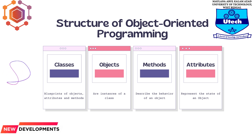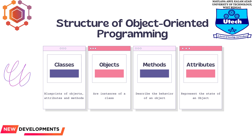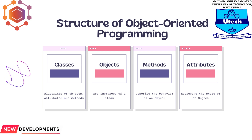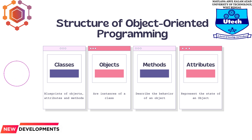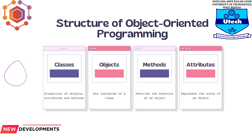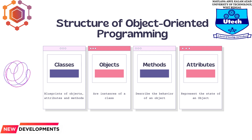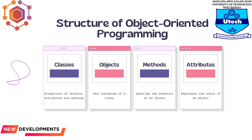Objects can correspond to real-world objects or an abstract entity. When a class is defined initially, the description is the only object that is defined. Methods are functions defined inside a class that describe the behavior of an object. Each method contained in a class definition starts with a reference to an instance object. Additionally, the subroutines contained in an object are called instance methods.